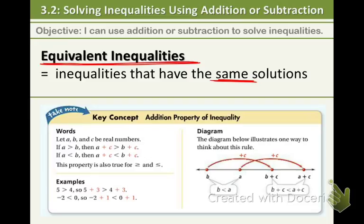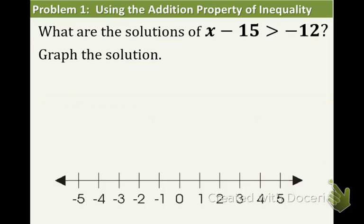We're going to first focus on addition, which is actually very similar to what we've done with equations. You just add the same thing to both sides. In this first example we have x minus 15 is greater than negative 12. We're going to add 15 to both sides because we're isolating the x, getting it by itself.